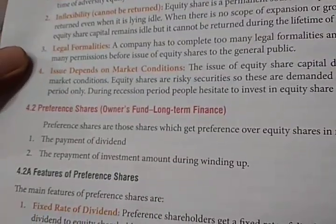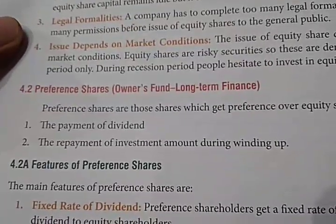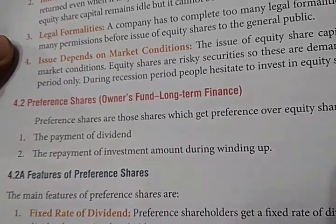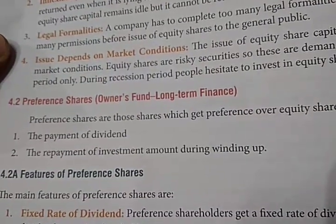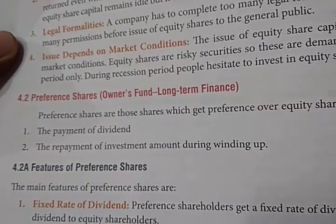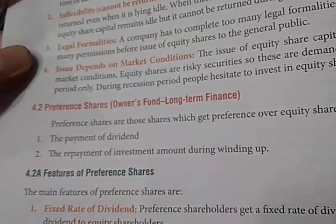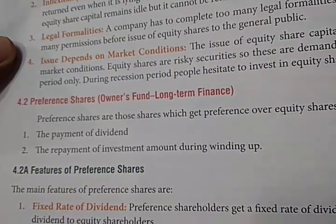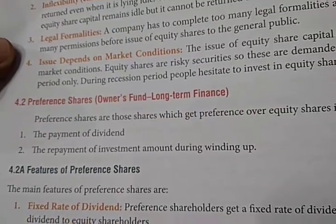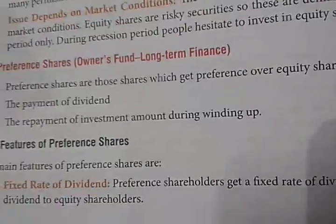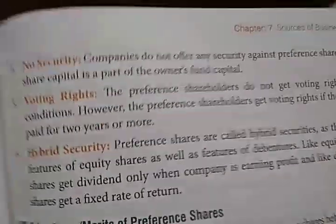Next topic is preference shares. Preference shares are those shares which get preference over equity shares in respect to payment of dividend at a fixed time period and repayment of investment amount during winding up. First feature is fixed rate of dividend — preference shareholders receive dividend at a fixed rate, whether or not the company is earning sufficient profit. Second is no security — the company does not offer any security against preference shares.